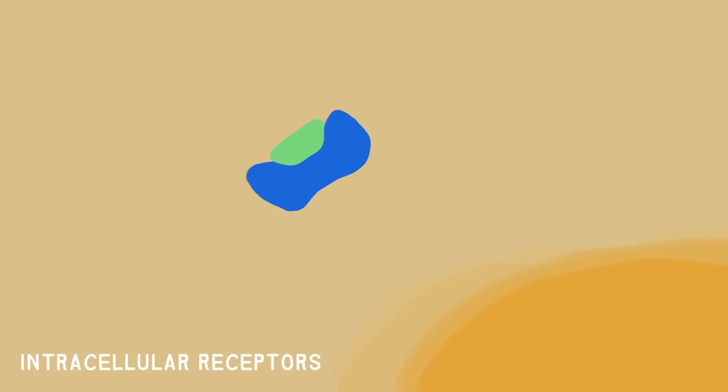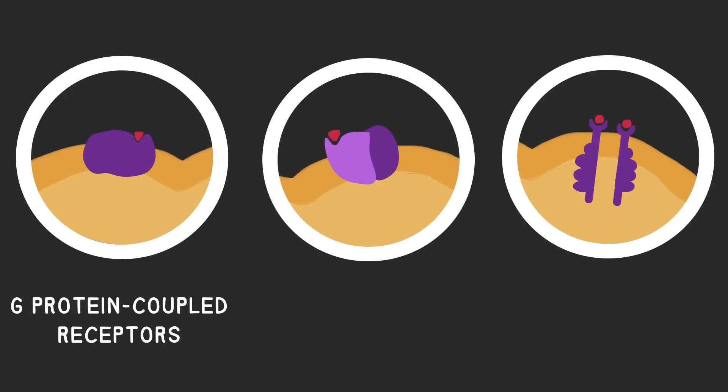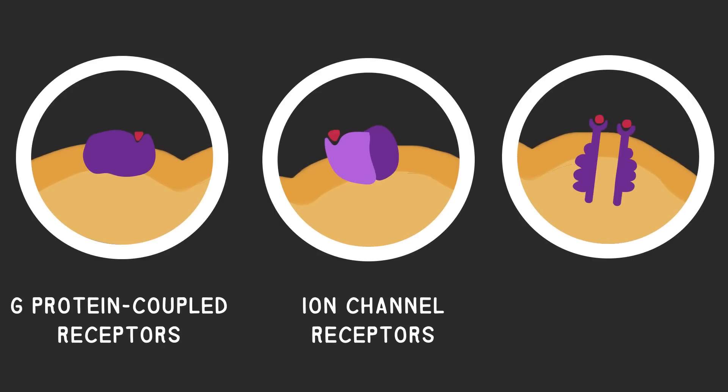Receptors in the cell are called intracellular receptors, and they typically bind with small hydrophobic molecules that can pass through the plasma membrane easily. Some common types of receptors embedded in the plasma membrane are G-protein-coupled receptors, ion channel receptors, and receptor tyrosine kinases. Each of these have different functions and therefore work in different ways.